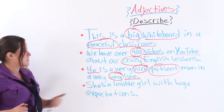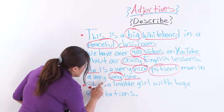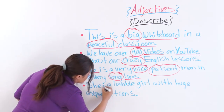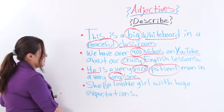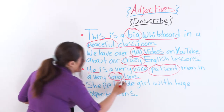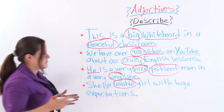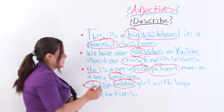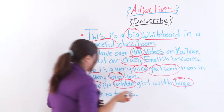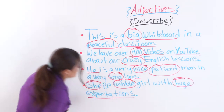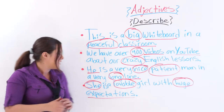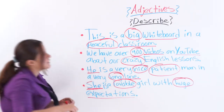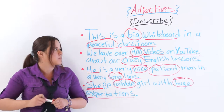The next example says: she is a lovable girl with huge expectations. 'Lovable' is the adjective describing the pronoun 'she.' And 'huge' is the second adjective, which describes the noun 'expectations.' So: she is a lovable girl with huge expectations.